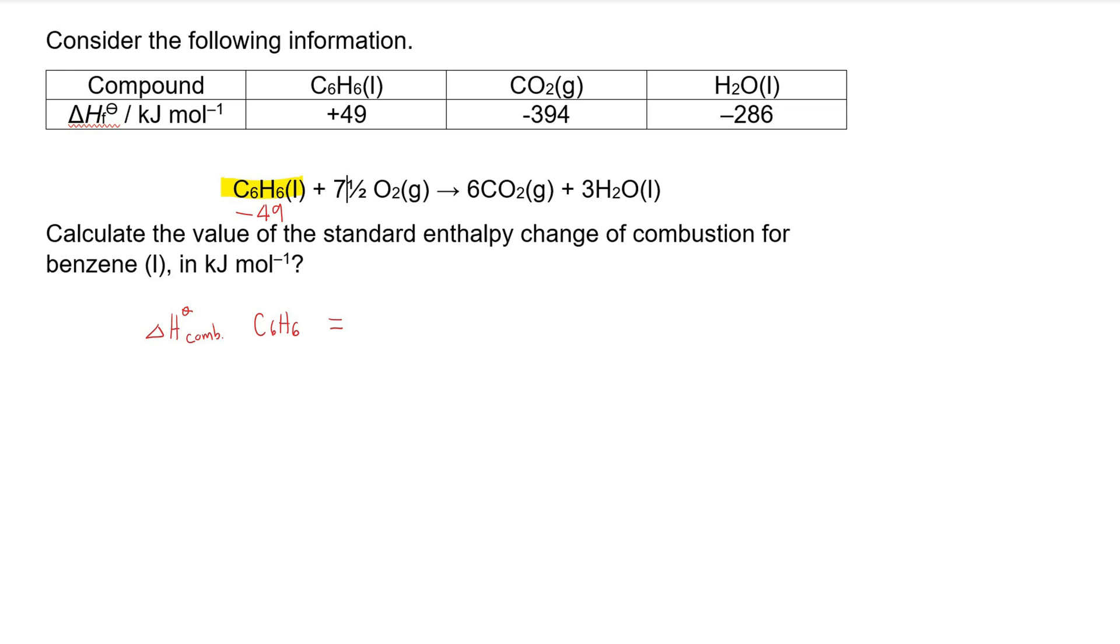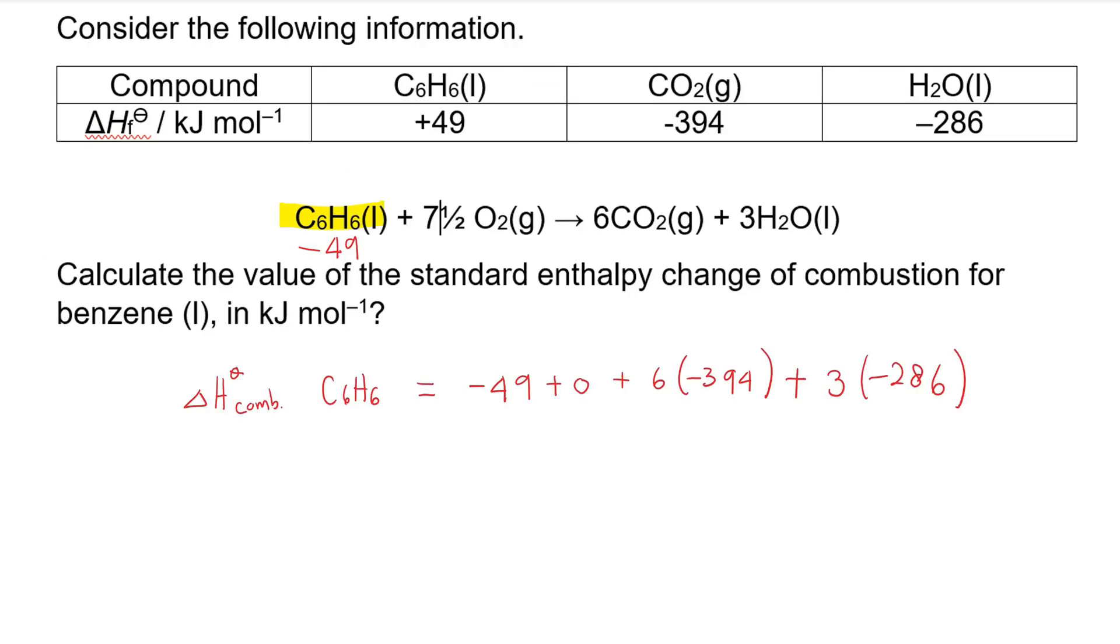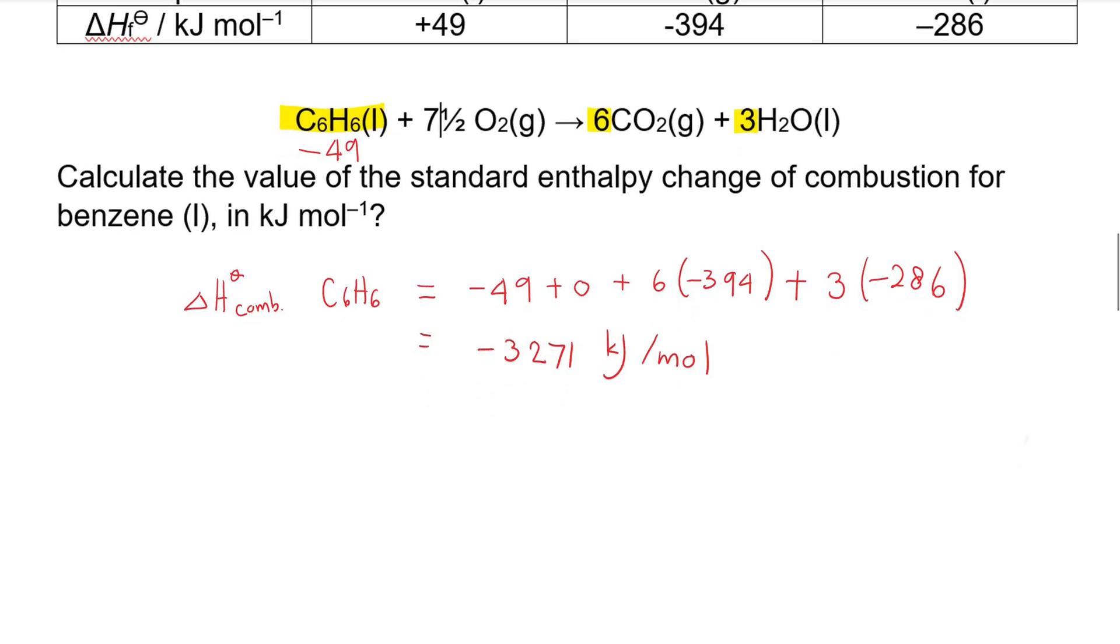Now the enthalpy change of combustion of benzene is just the total of all the enthalpies of formation, which are these numbers. We multiply the formation of carbon dioxide by 6 because we have 6 carbon dioxide and multiply the enthalpy change of formation of water by 3 because we're forming 3 moles of water. This will give us a total of negative 3271 kilojoules per mole, which means that when one mole of benzene is combusted, 3271 kilojoules of energy is released.